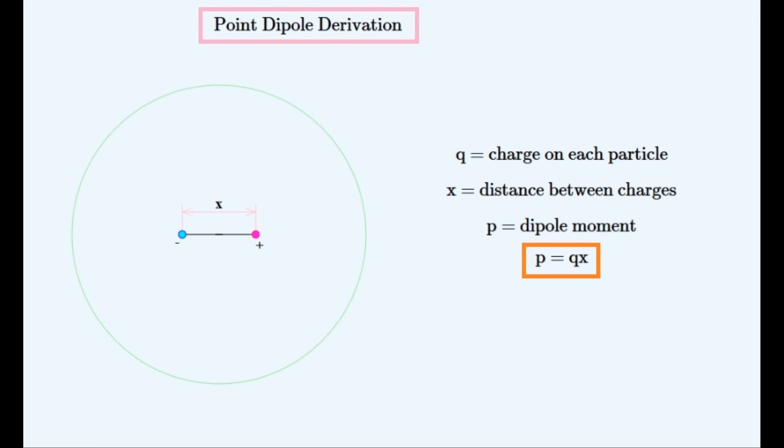Hello and welcome to this video about point dipoles or ideal dipoles. A dipole is a pair of two charged particles that have opposite charges of the same magnitude and are separated by a small distance. The dipole moment of this dipole is equal to this charge multiplied by this separation between the two charges. It is a vector that points from the positive towards the negative charged particle.